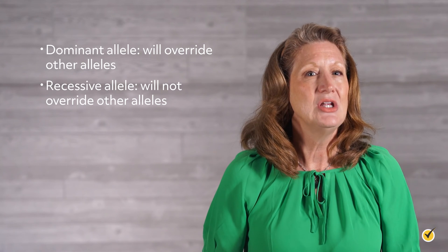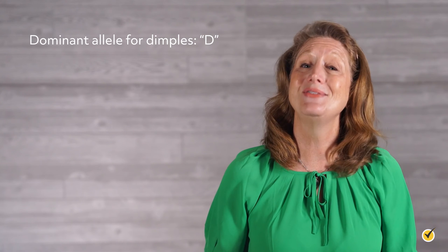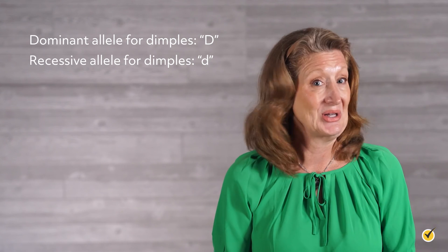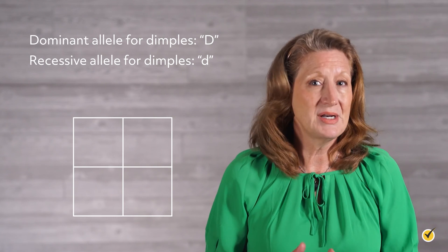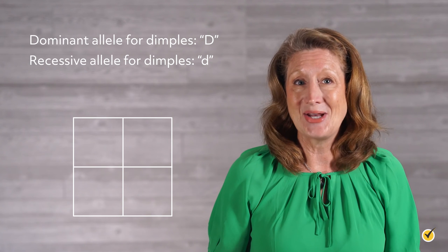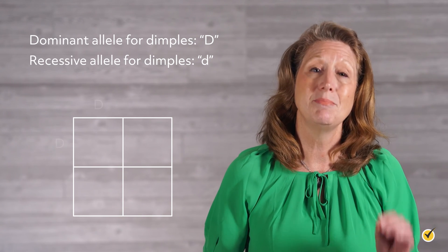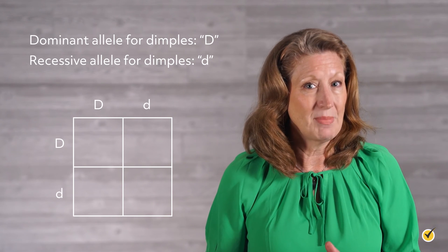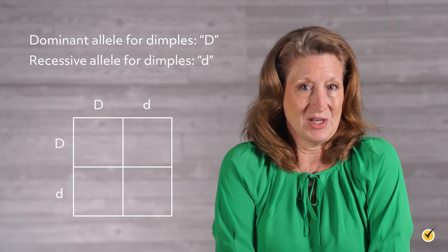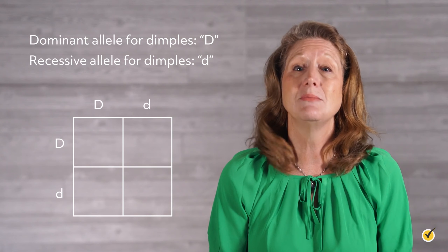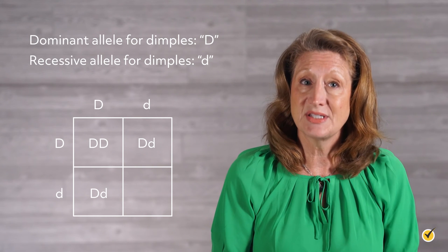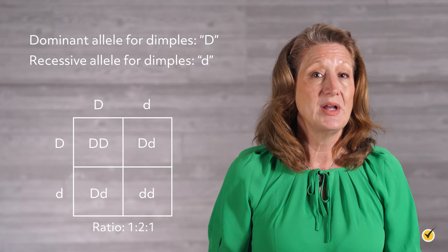Let's look at this in more detail using a dimple mutation. Let's say the dominant allele means you have dimples, so we'll assign it the capital letter D. And let's say the recessive allele means you don't have dimples — we'll assign it the lowercase d. If we draw a simple Punnett square, we can determine a genotypic and phenotypic ratio for dimples. For this example, mom and dad are both heterozygous for dimples with the genotype Dd. Filling in the Punnett square, we get one offspring that is homozygous dominant DD, two offspring that are heterozygous Dd, and one that is homozygous recessive dd. So the genotypic ratio is 1 to 2 to 1.